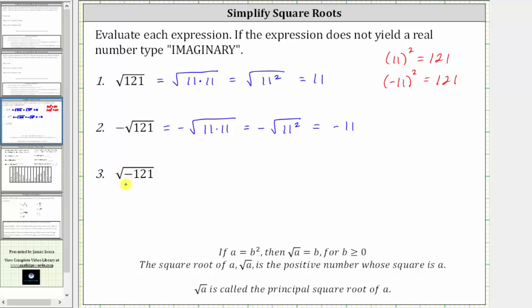And then for number three, we have the square root of negative 121. And we have a problem here because we already know if we square a positive or square a negative, the result is always positive. And since we cannot square a positive or negative number to get negative 121, this is not a real number, and therefore, we enter imaginary.